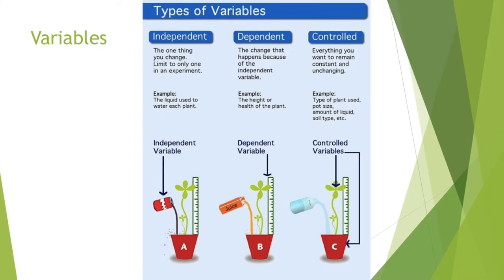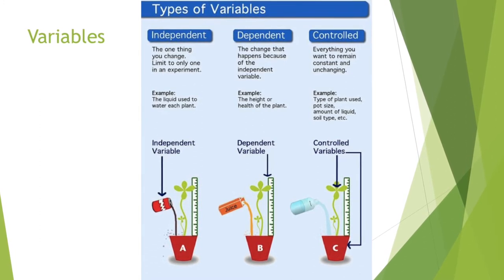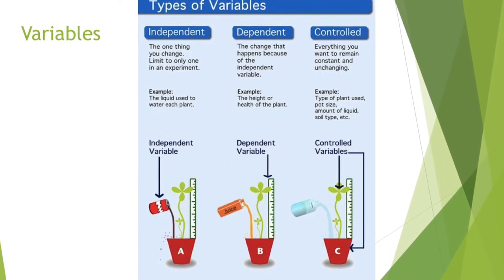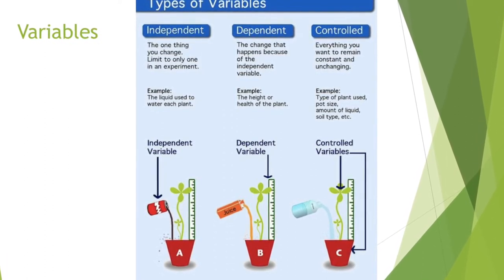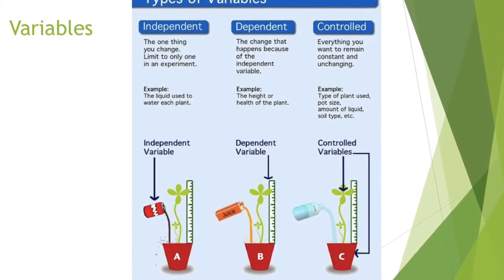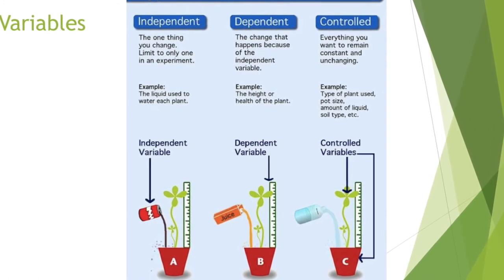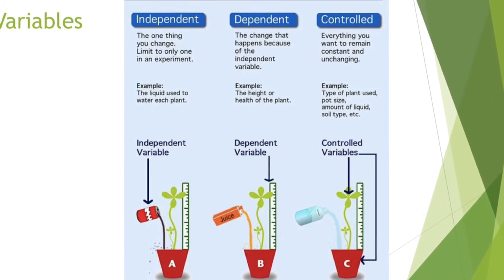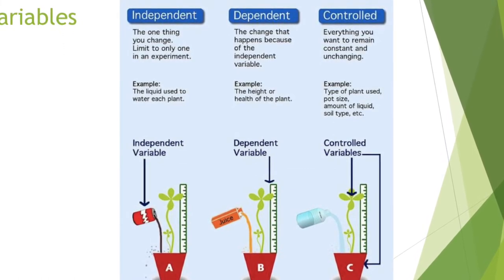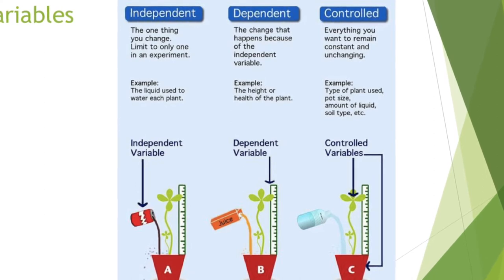We have three types of variable: the independent variable, the dependent variable, and the control variable. The independent variable is the one thing you choose to change — mine will be the substance I test. The dependent variable is the one I measure or record because it changes as a result of my independent variable — mine will be the colour change. The control variable is what we must keep the same to get reliable results — mine is using the same type of indicator.